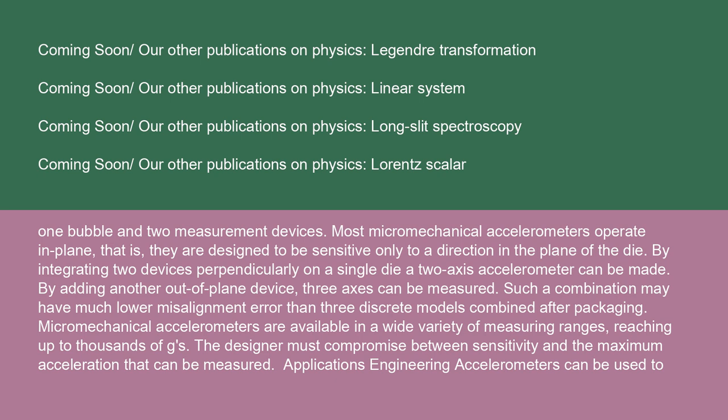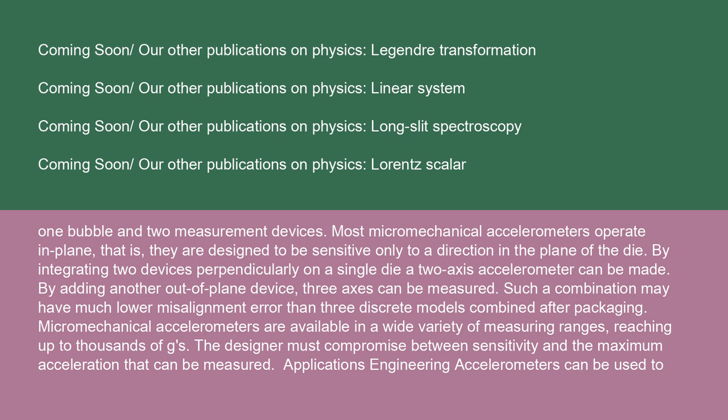Micromechanical accelerometers are available in a wide variety of measuring ranges, reaching up to thousands of Gs. The designer must compromise between sensitivity and the maximum acceleration that can be measured. Accelerometers can be used to measure vehicle acceleration, vibration on cars, machines, buildings, process control systems, and safety installations. They can also measure seismic activity, inclination, machine vibration, dynamic distance, and speed with or without the influence of gravity. Applications for accelerometers configured specifically for gravimetry are called gravimeters.